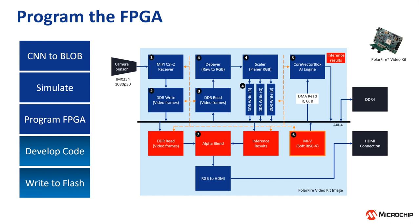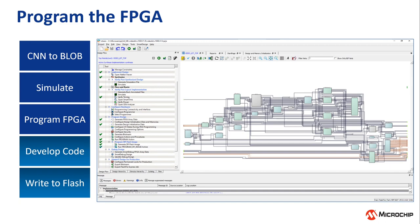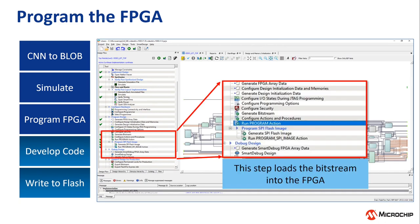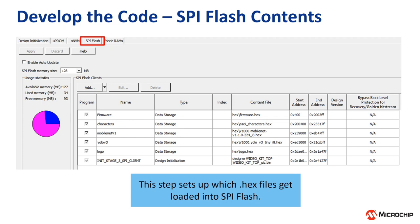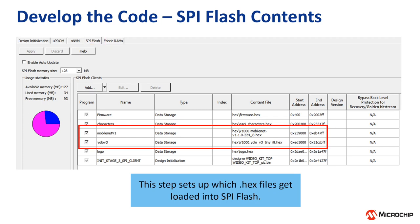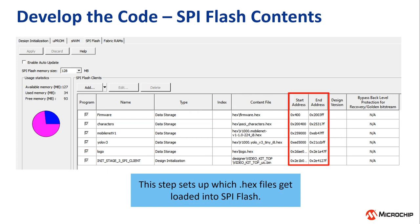Post-processing is managed by a software-based process. The example project is programmed into the kit by opening a project in Libero Software IDE and clicking Run Program Action. The example project also includes pre-converted CNNs loaded into the SPI Flash, which can be viewed by opening the design initialization data and memory tools. Under the SPI Flash tab, MobileNet version 1 and TinyYolo version 3 are already loaded into non-volatile storage, each with a start and end address that we will reference when writing the embedded code.